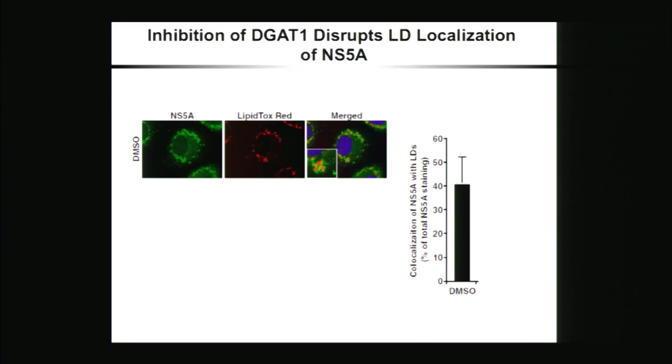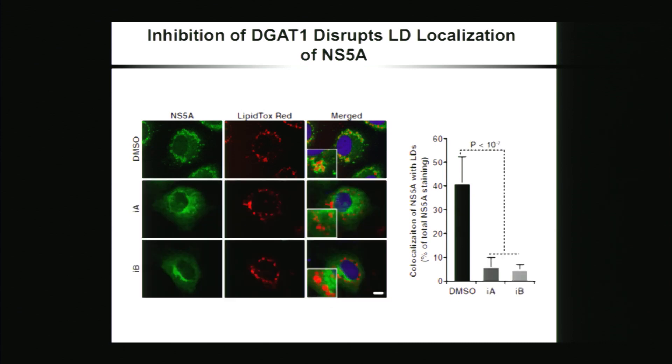Another interesting fact is that NS5A is the only HCV protein that, when expressed singly, can access lipid droplets. Here you can see that in the context of HCV infection, NS5A in green does indeed accumulate a lot around the lipid droplets stained in red. We wondered if DGAT1 was involved in this translocation of NS5A to lipid droplets. We treated cells with two structurally unrelated DGAT1 inhibitors, called A and B. Upon inhibition of DGAT1 activity, NS5A relocalized to the ER and no longer accessed the lipid droplets. Quantification of co-localization between NS5A and lipid droplets among many cells confirms these results.